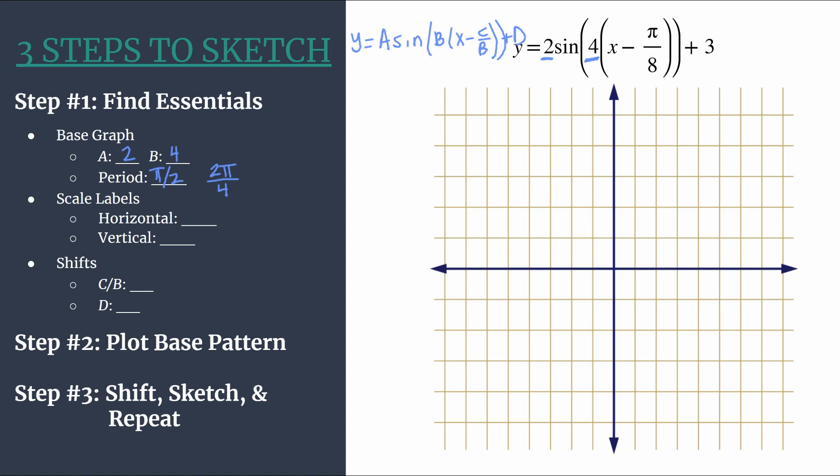Now we can choose how to label our axes. So what to label each tick mark. And for the horizontal scale, we're going to be very intentional. With this method, we try to really set ourselves up so that each of our key points, when we're plotting our base pattern in the next step, will align with our horizontal tick marks. So we do that knowing we're going to have 4 key points. We take our period and we divide it by 4. So each key point will align until we do the shifts. It'll align with our tick marks. So if we take pi over 2 and we divide by 4, that's the same thing as multiplying by 1 fourth. So we'll label our horizontal tick marks by pi over 8.